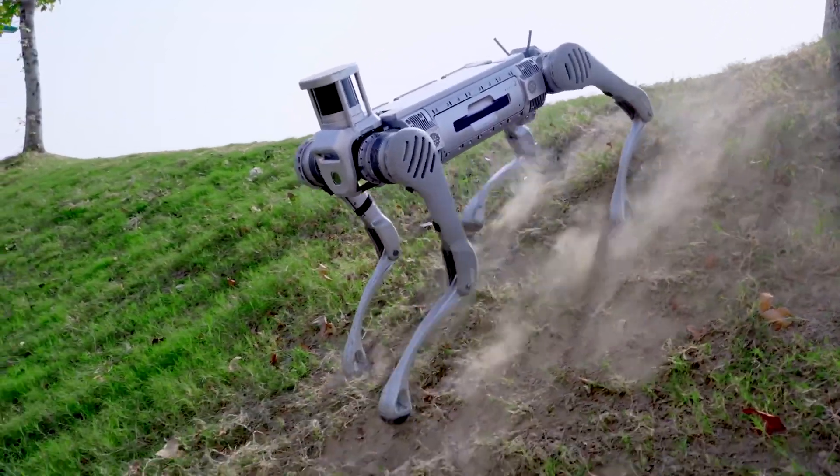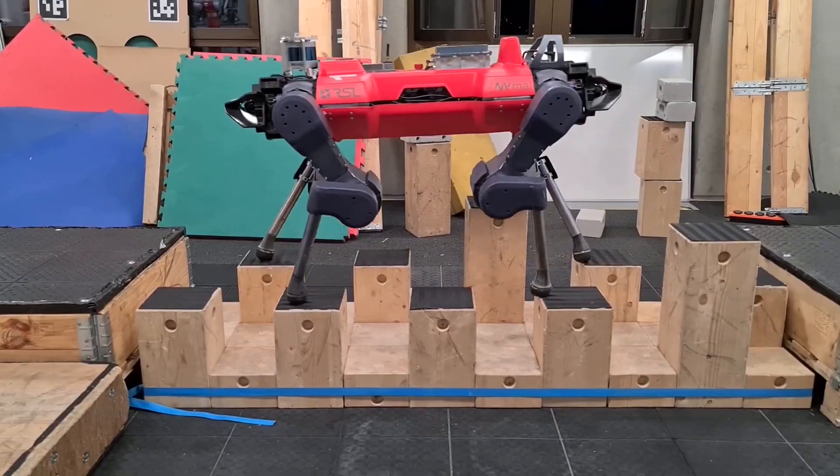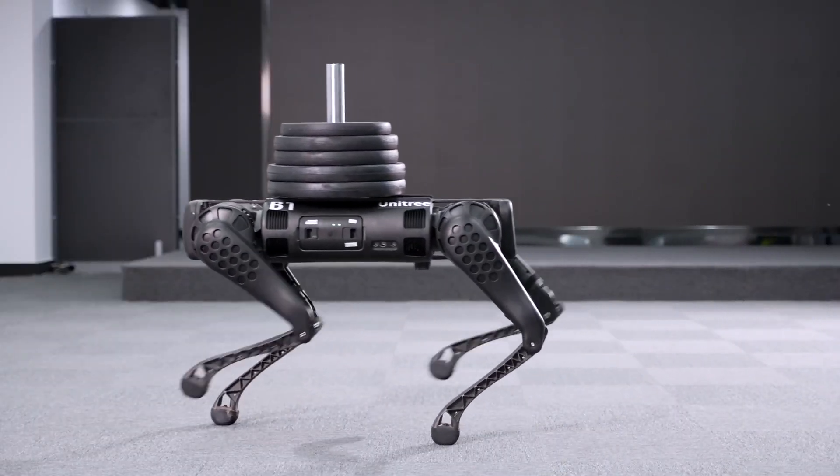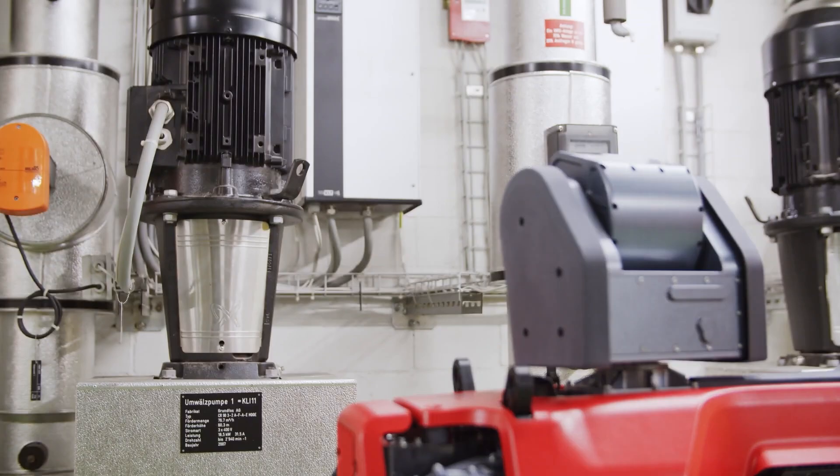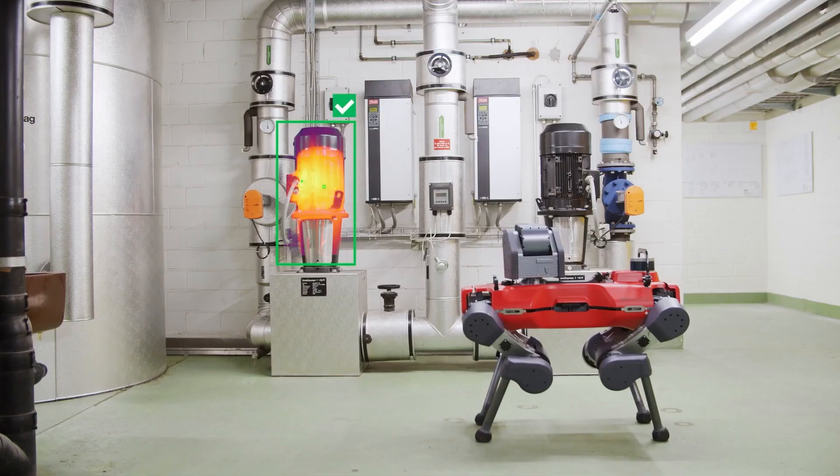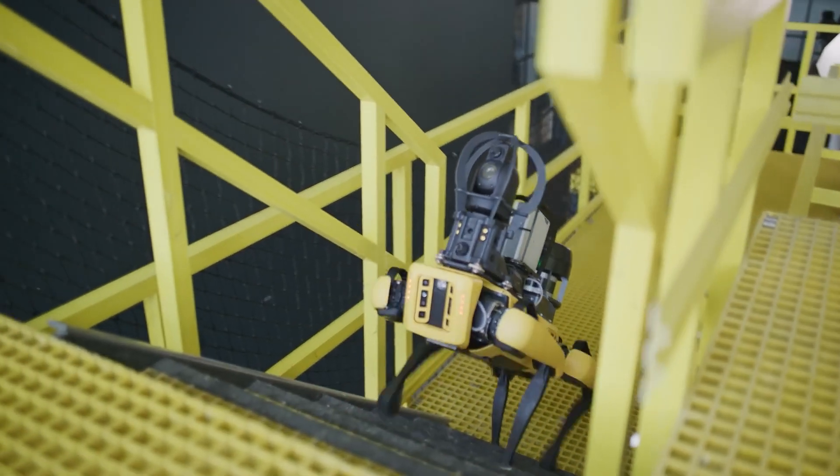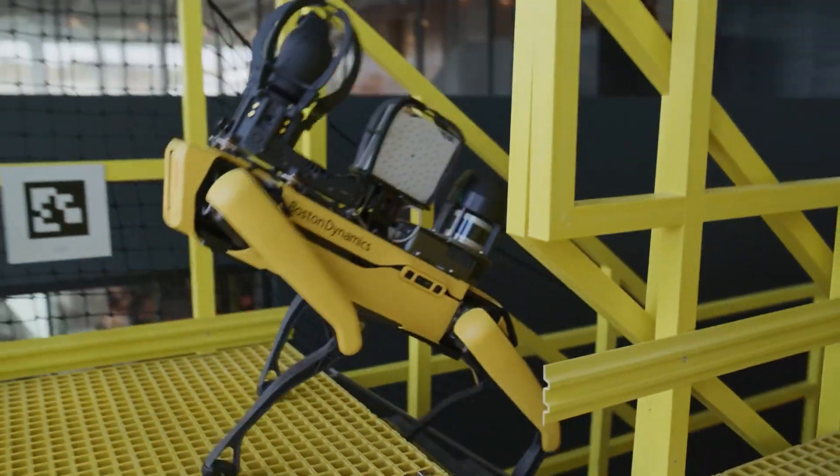Quadrupeds, or robot dogs, offer unique advantages in stability and load capacity given their four-legged design, which is why they're a popular choice for a wide variety of automated tasks including remote inspection, surveying, and logistics. One of the most common obstacles within these environments is stairs,